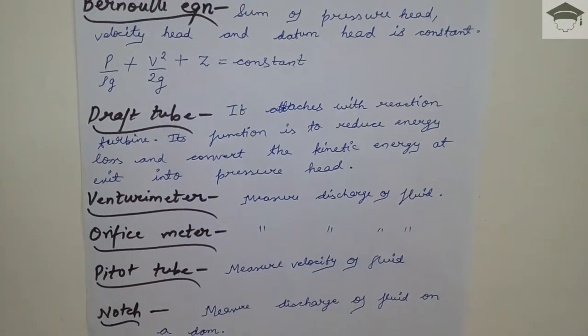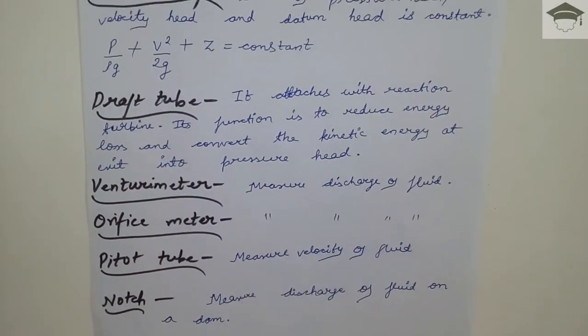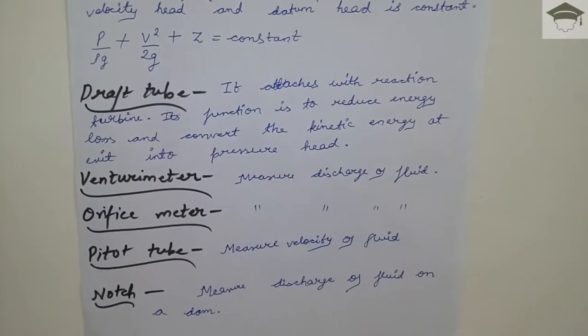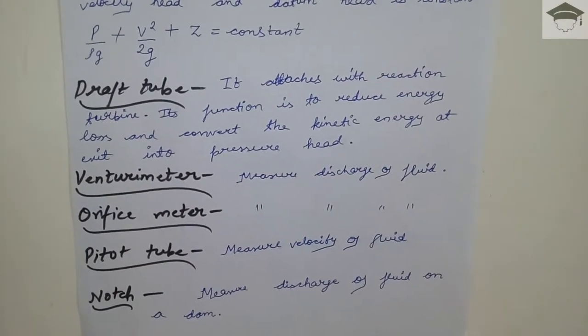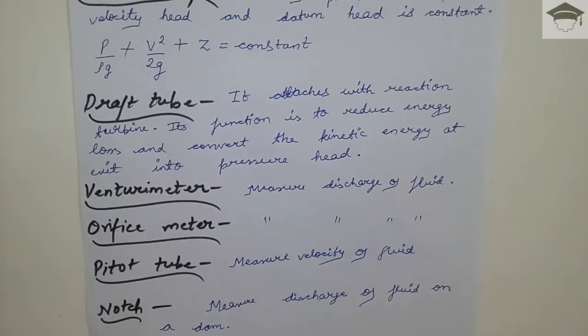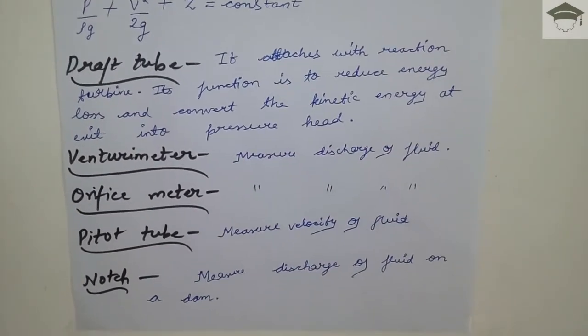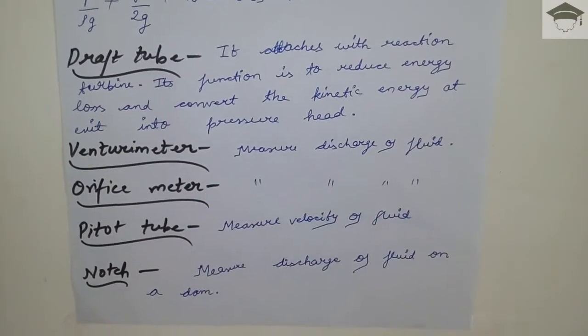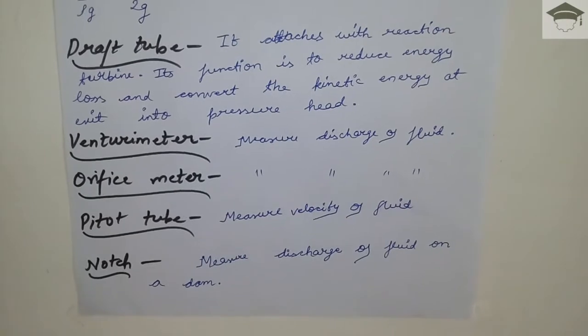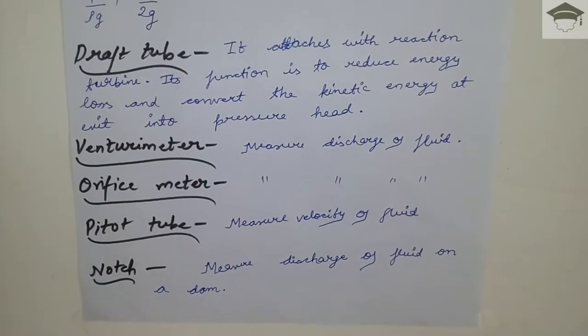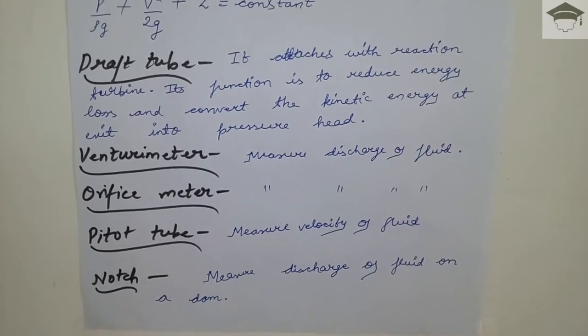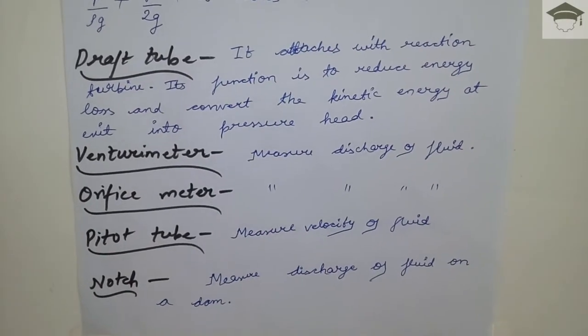Venturi meter: it measures the discharge of the fluid. Orifice meter: it also measures the discharge of the fluid. Pitot tube: it measures the velocity of the fluid.